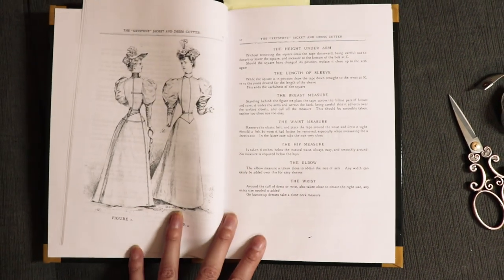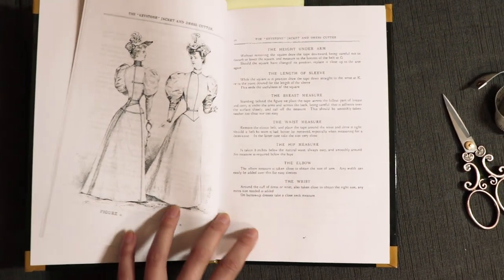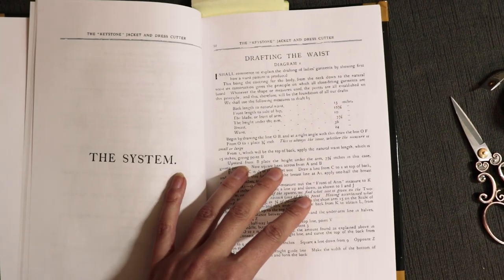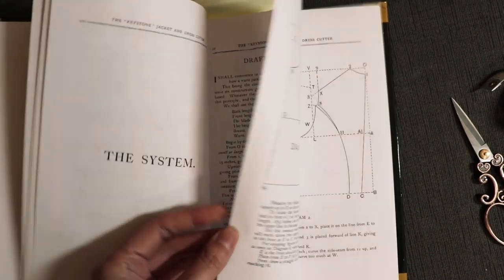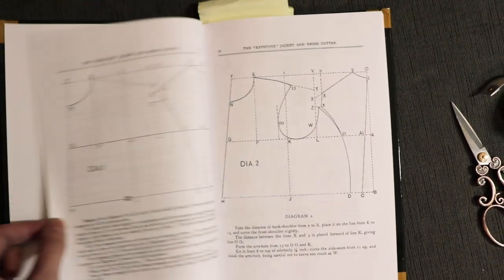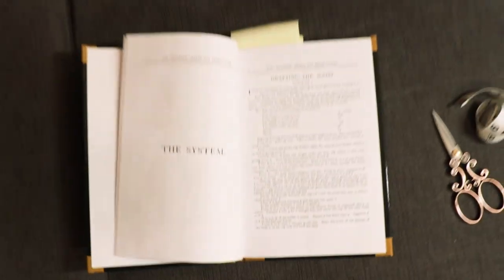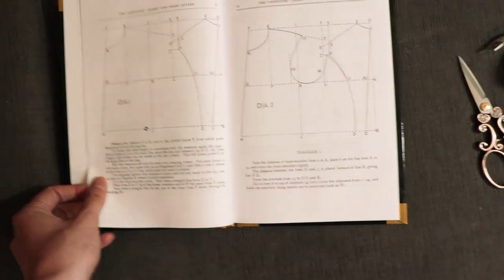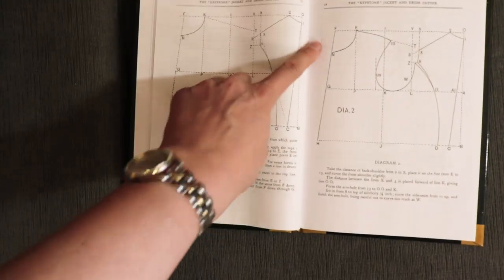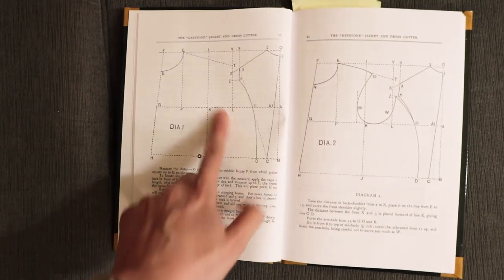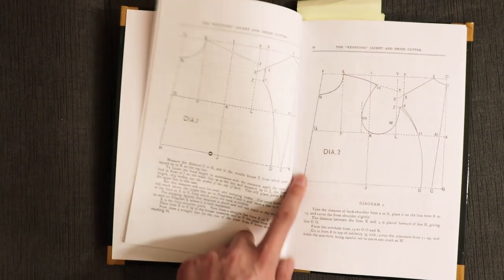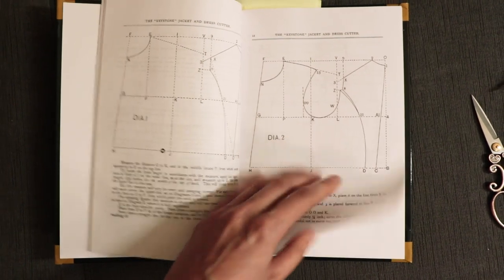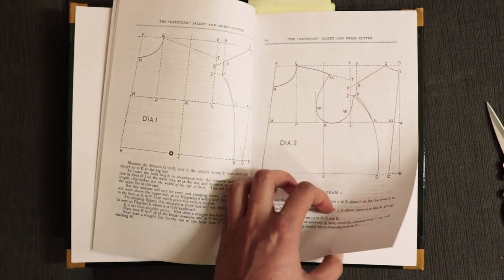So the first thing I had to do is measure myself. And then once I did that, I could go ahead and start drafting the basic body block. Now the instructions in this book were pretty straightforward. You start by drafting this center back length, and then you figure out all this stuff. This is kind of step one, this is step two. If you want to do it yourself, you can.